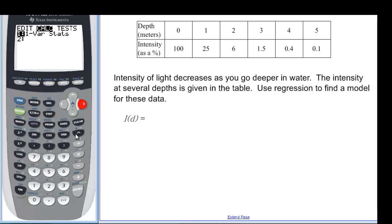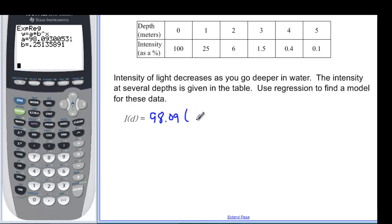So stat over to calculate. 0, remember, was exponential regression. There it is. So press enter. And we have I(d) is going to be equal to 98.09 times 0.25 to the d.